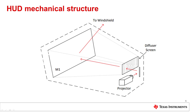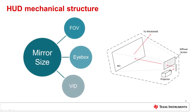The size of this mirror is mainly determined by three HUD system parameters: FOV, iBox, and to a lesser extent, VID. Increasing FOV or iBox size will cause a nearly linear increase in overall volume, whereas increasing VID has a more logarithmic relationship.